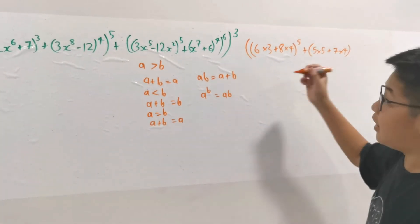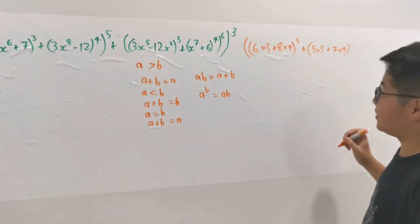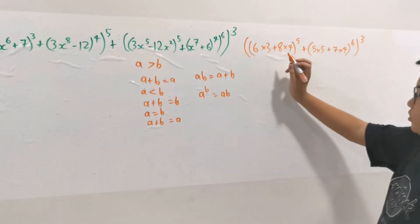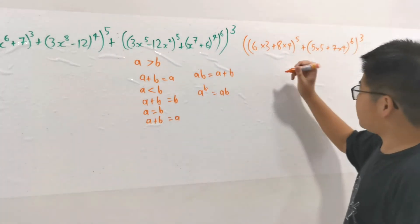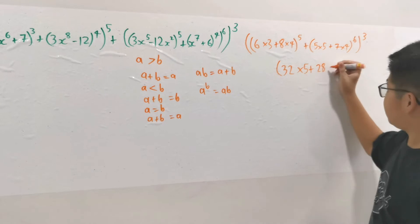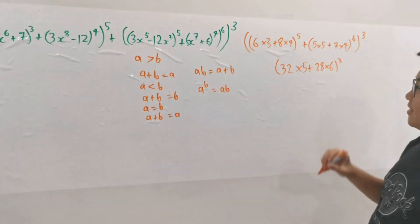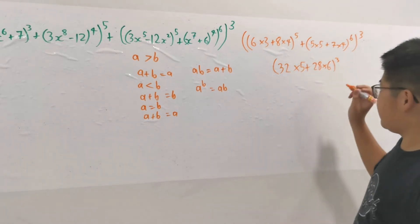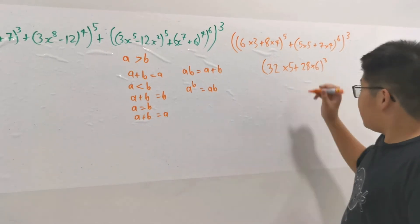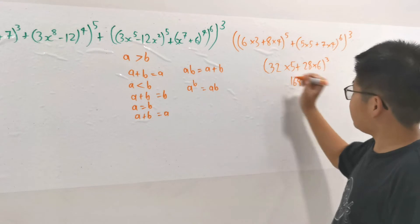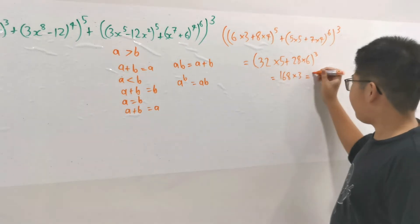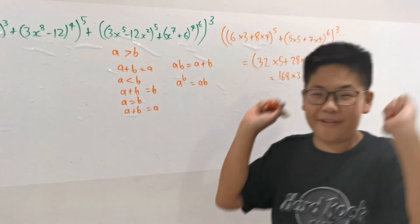You have to compare these terms. So you have 32 times 5, which is bigger than 7 times 4 which is 28, times 6 cubed. So this is 160, this is 168. Since 168 is larger, 168 times 3 equals... wait for it... 504. Excellent, power of 504!